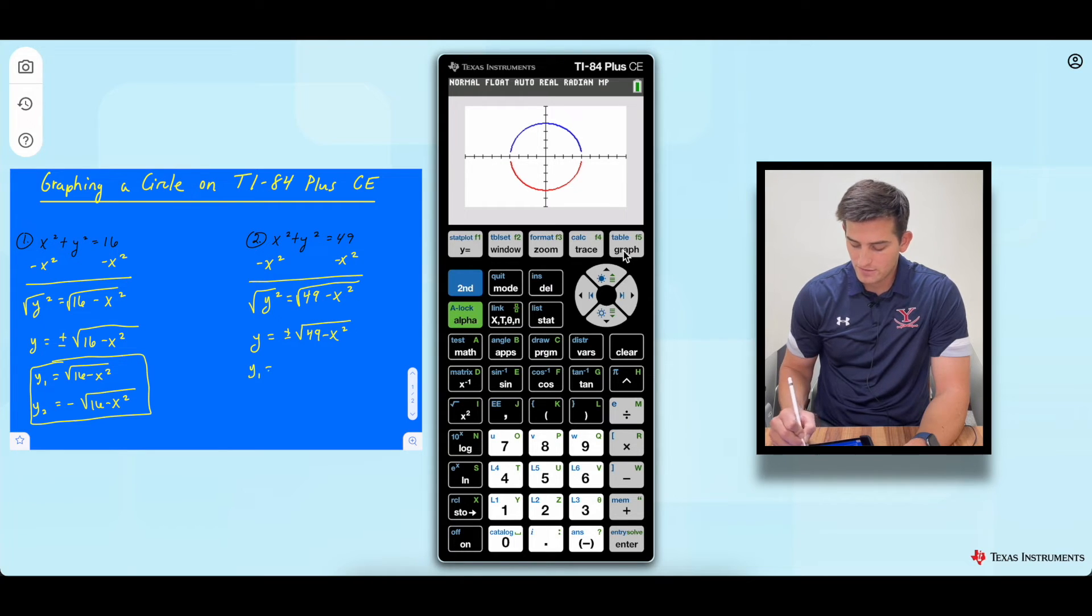So in the calculator, let's graph this as y1 is equal to positive square root of 49 minus x squared. And y2 is equal to negative square root of 49 minus x squared. Okay. So those are our two equations we're going to graph.